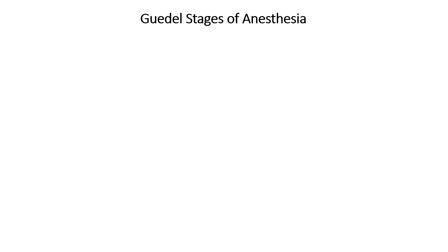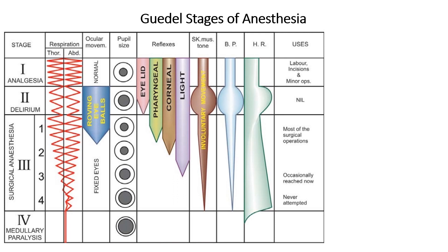This diagram demonstrates the physical signs observed during each stage of anesthesia. Stage 1, or analgesia, begins with anesthetic administration. The patient experiences pain relief and may feel drowsy but remains conscious and communicative, ending when they lose consciousness. Minor procedures can be performed at this stage.